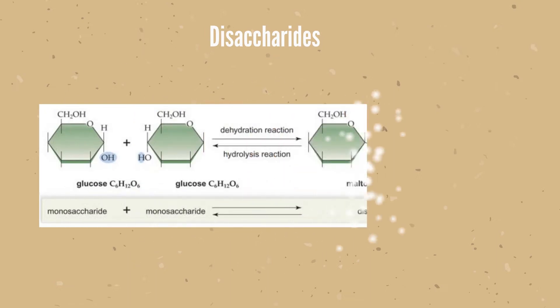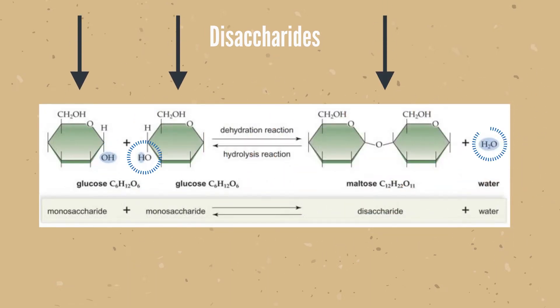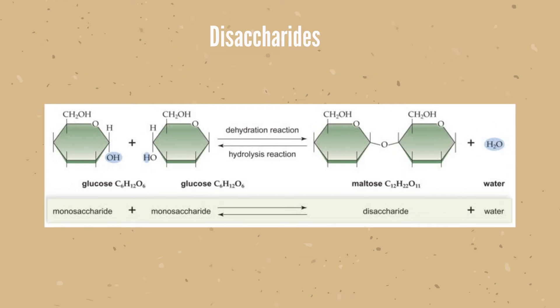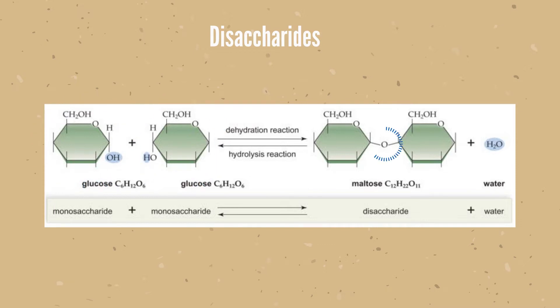Similar to monosaccharides, we have disaccharides. These molecules contain two monosaccharides joined during a dehydration reaction. Disaccharides are defined as the sugar formed when two monosaccharides are joined by glycosidic linkage.